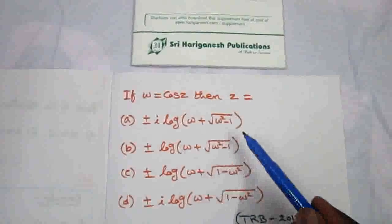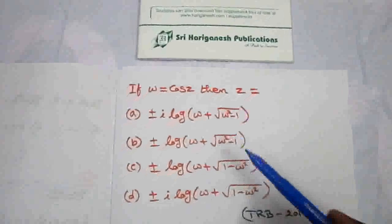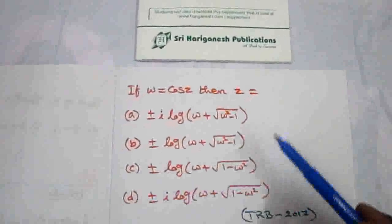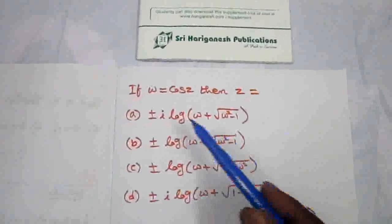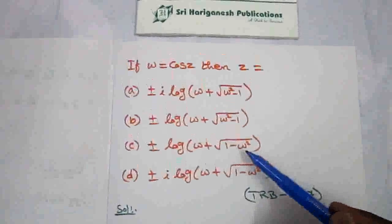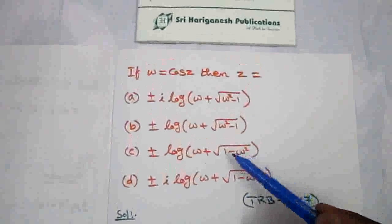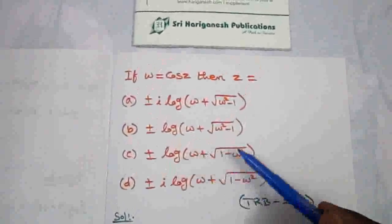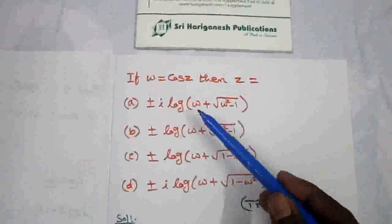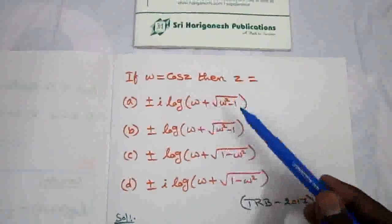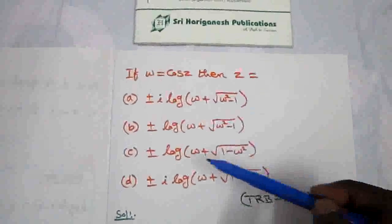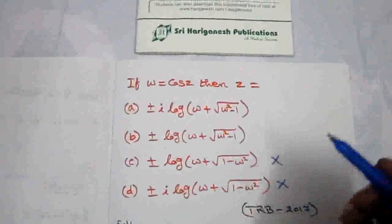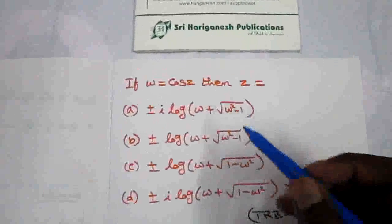So definitely the value becomes either a or b, because c and d cannot be the answer. When I put w equal to cos z, we get 1 minus cos squared z equals sine squared z, giving only sine z. So cos z plus i sine z — I want the cos z plus i sine z form, so c and d are not possible. Only a or b is possible.